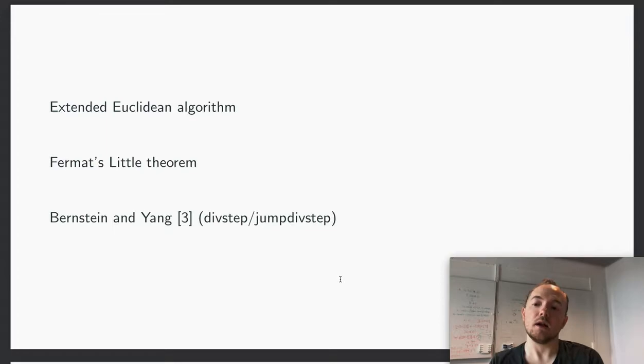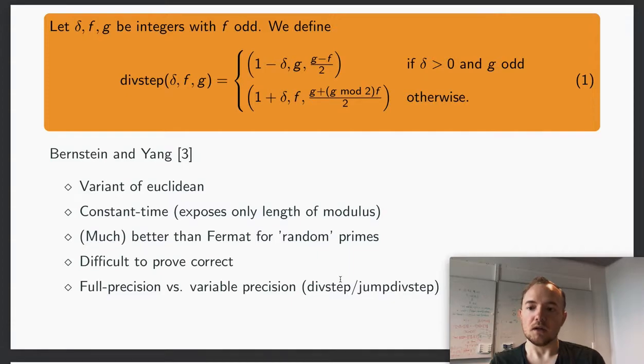So the algorithm that we chose to formalize: when you do modular inversion there's basically two ways to do it. You can use the extended Euclidean algorithm or you can use Fermat's little theorem to do inversion using modular exponentiation. The algorithm that we chose is state of the art by Bernstein and Yang, published a couple of years ago. This is a variant of the Euclidean algorithm.